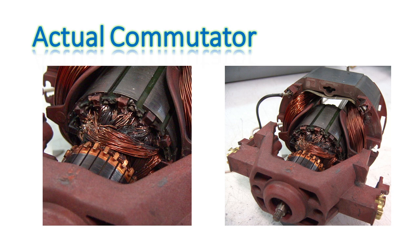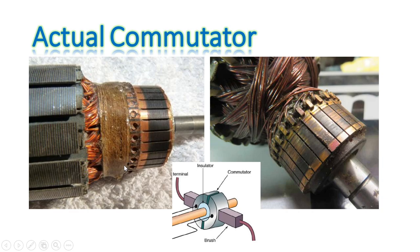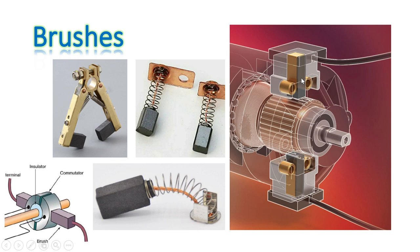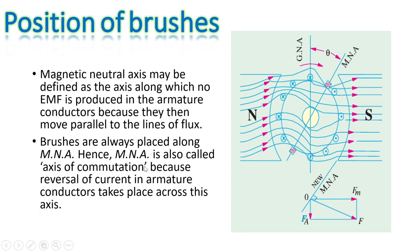Obviously, the actual commutator is not that simple — it has many segments and is not just a two-segment split ring. The actual machine has many small segments in the commutator and many coils. There are many windings, each connected with a separate commutator segment. To collect current from this rotating commutator, we have a brush assembly. These brushes are housed inside a proper mechanism which continuously presses them through a spring, and the brushes are made of carbon.